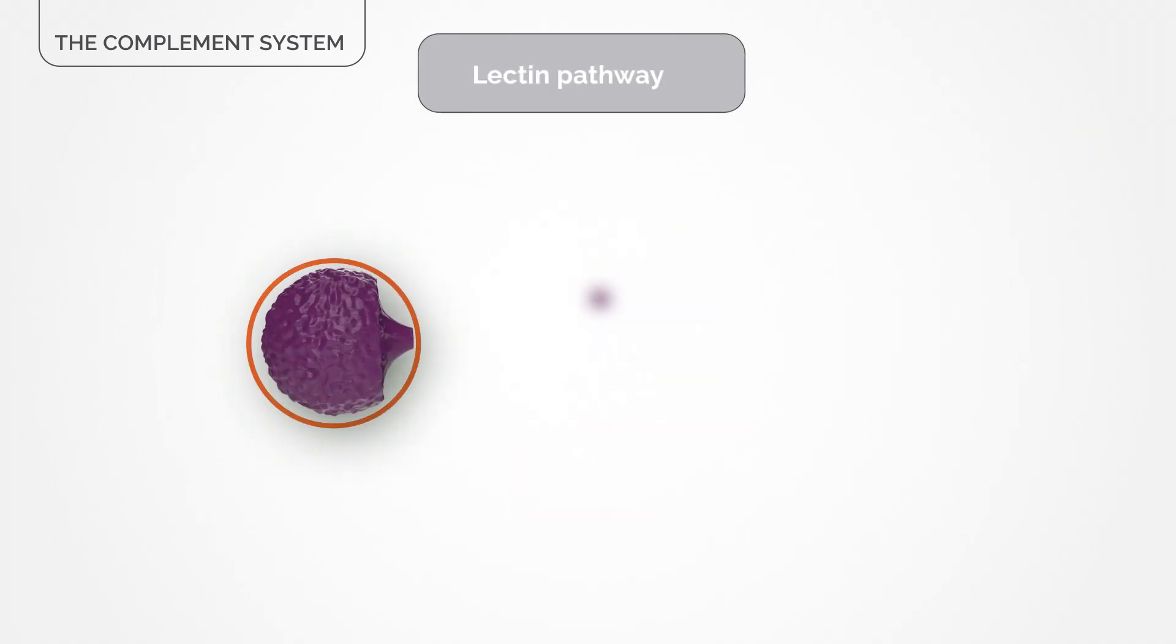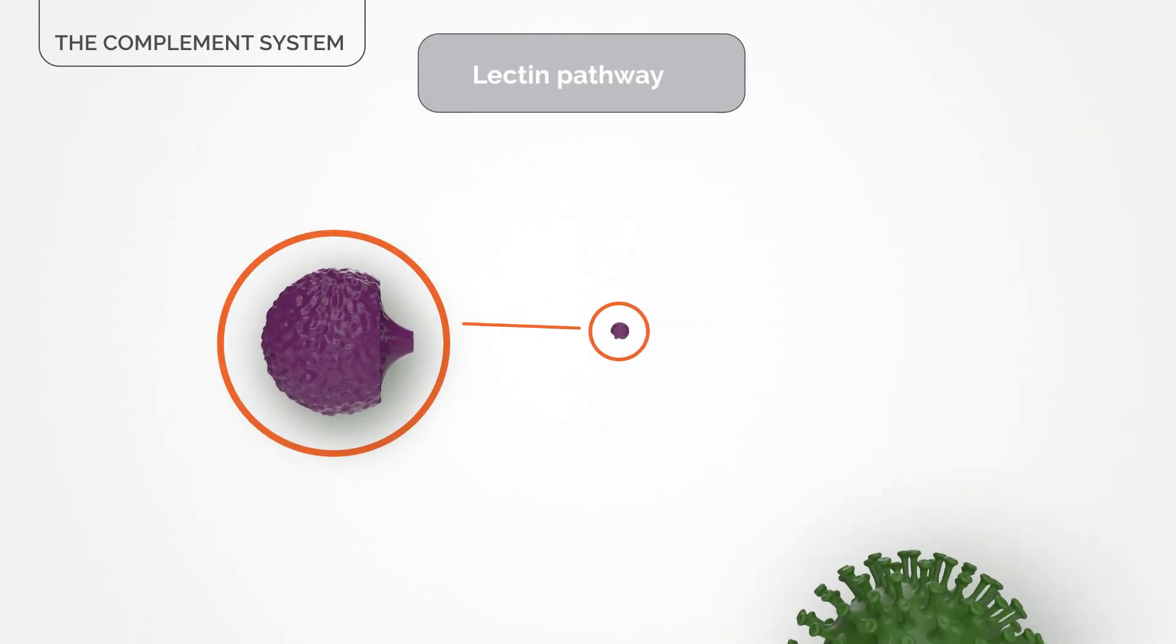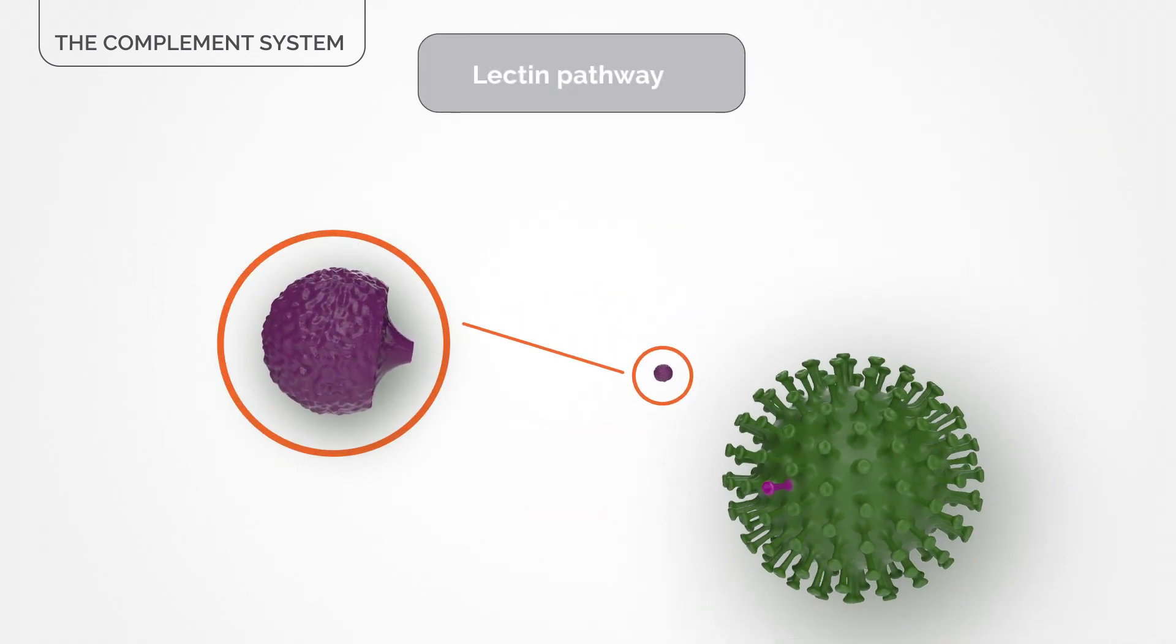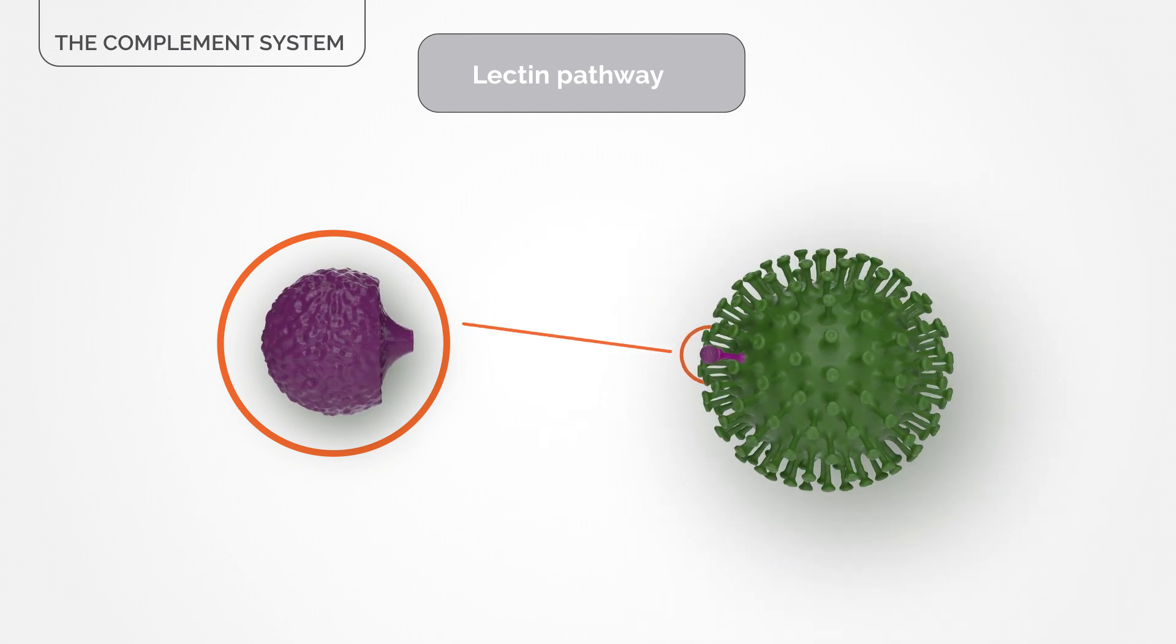The lectin pathway is activated by natural molecules in our body that recognize sugars at the surface of infectious organisms.